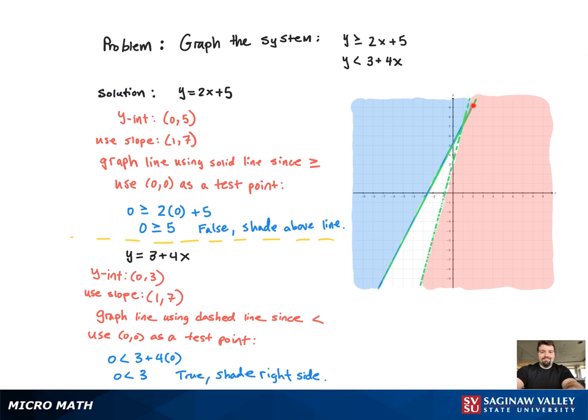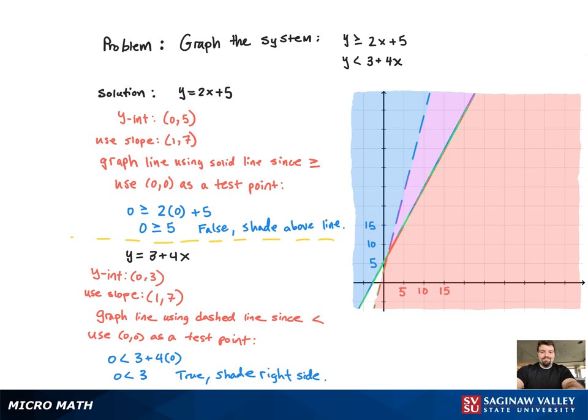Now the solution region is going to be that little spot that you see on our graph. And that's because that's where the two shaded regions overlap. Here's another graph for a better visual representation.